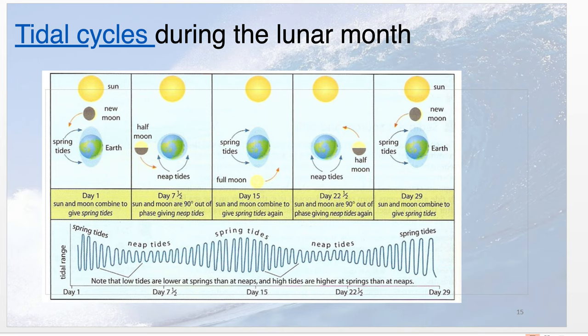Briefly touching on tides: waves are caused by wind, but tides are caused by the interaction of the moon's gravity. Here's the earth in space with the moon and the sun. The moon acts upon the earth — we exert our gravity on the moon which is why it orbits us, but the moon also exerts gravity on the earth, and this manifests itself as tides. Low and high tides are basically caused by the moon.